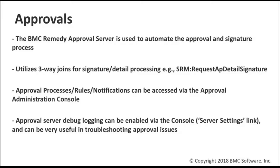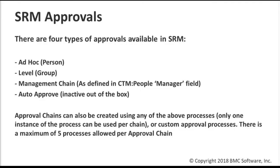Via the approval administration console, on the server settings link on the left-hand side, that's where you can enable approval server debug. You'd want to set the level to debug or all, and then if you don't set a file path, it's going to use a default log path for the AR server, or you can choose a different path for the file. In the context of SRM, we've got four available out-of-the-box approval types: ad hoc, which is a specific person chosen for the approval; a level approval called group approval; management chain, based on the person's manager in their CTM people record; and an auto-approval rule that's inactive out-of-the-box but can be utilized.